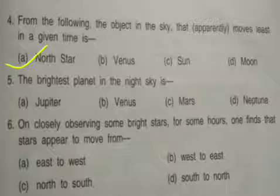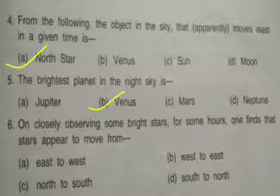Fifth: The brightest planet in the night sky is — options are: A, Jupiter; B, Venus; C, Mars; D, Neptune. The correct option is B, Venus.